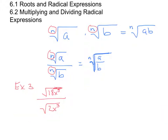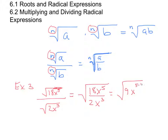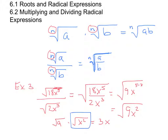What about the square root of 18x to the fifth divided by the square root of 2x cubed? This can be simplified because the index of each radical is the same. We write this as the square root of 18x⁵ divided by 2x³. We know 18 divided by 2 is 9, and x to the fifth divided by x to the third is x to the fifth minus three, simplifying to the square root of 9x². The square root of 9x² equals the square root of 9 times the square root of x², giving us 3 times x — that is, 3x.